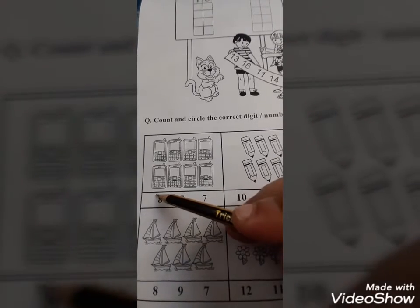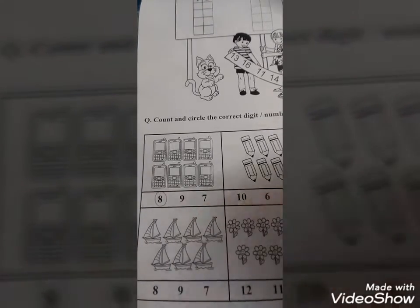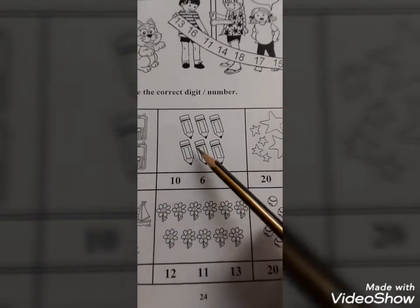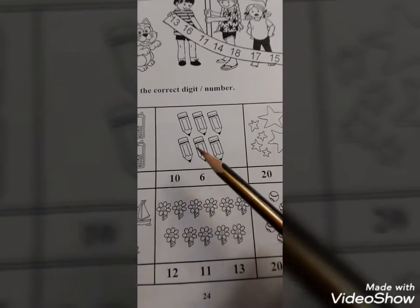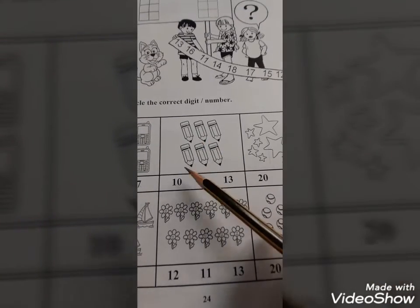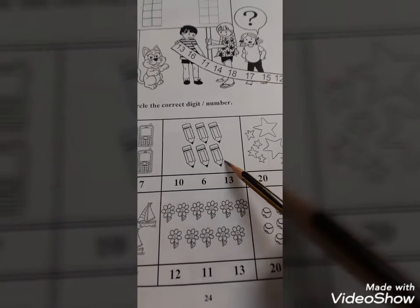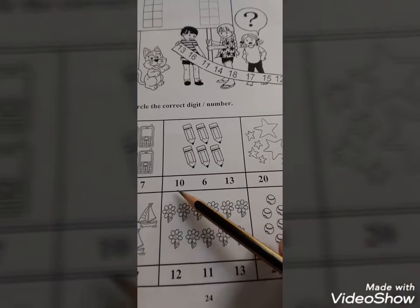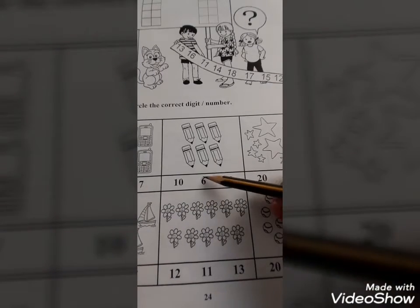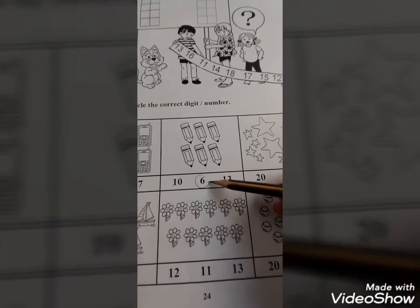Now time to count these pencils and find out the correct number: one, two, three, four, five, six. Where is six? Yes, this is six. So this is your correct digit, circle this.